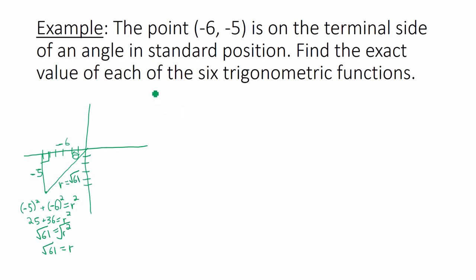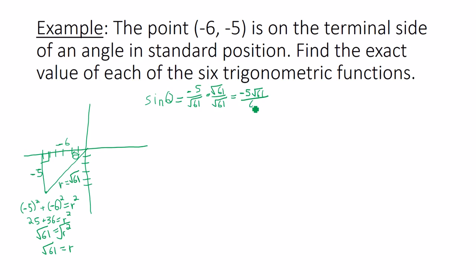Now we're ready. Sine of theta: sine is opposite over hypotenuse, so negative 5 over square root of 61. We have to rationalize because there's a radical in the denominator, so multiply by square root of 61 over itself. This gives negative 5 square root of 61 over 61. You can leave the negative sign in the numerator or bring it out front — either way is fine.